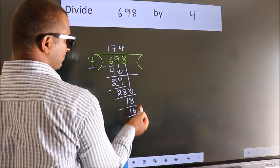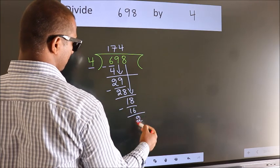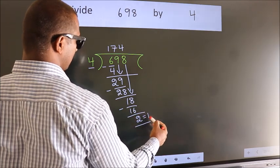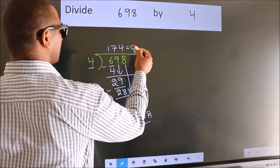No more numbers to bring it down. So, we stop here. This is our remainder. This is our quotient.